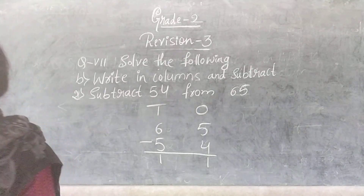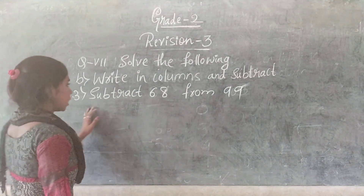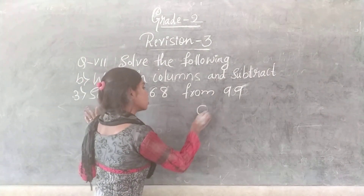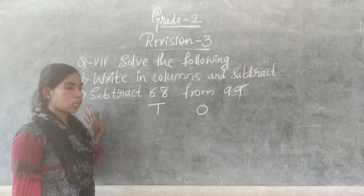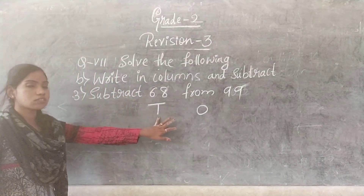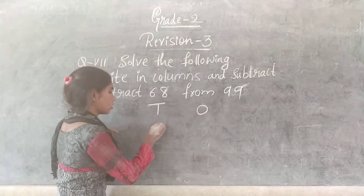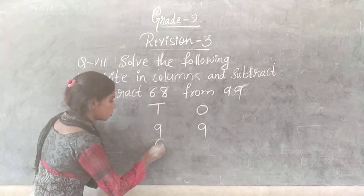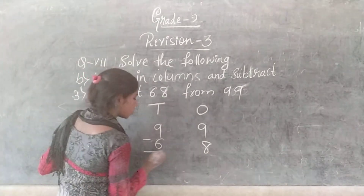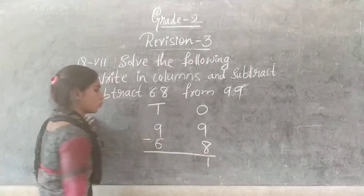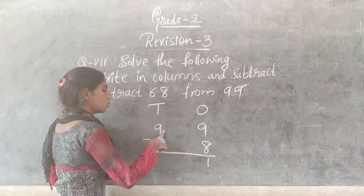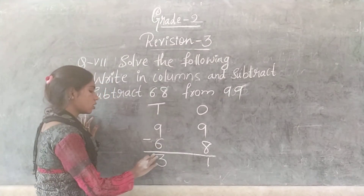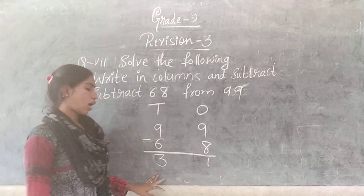The third one is subtract 68 from 99. Write 99, then write 68 below. Subtract: 9 minus 8 is 1, and 9 minus 6 is 3. The answer is 31.